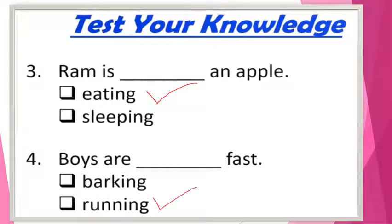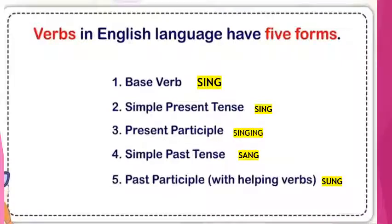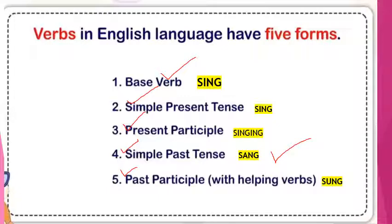Before I leave, I would also like to tell you about the various forms of verbs. Verbs in the English language have five forms: base form, simple present tense, present participle, simple past tense, and past participle. Let us take an example with the action word 'sing.' The past tense for 'sing' is 'sang,' and the past participle is 'sung.' That's all for today — have a nice day, children. Bye bye!